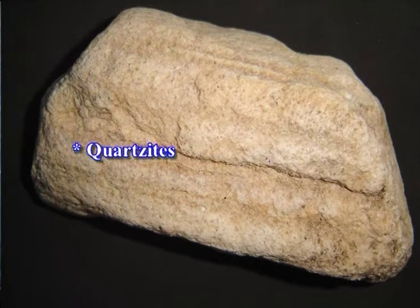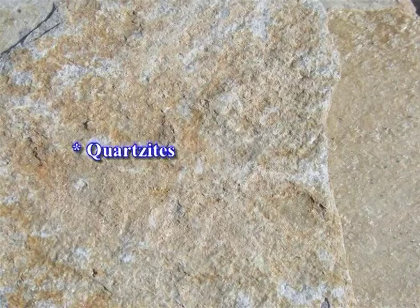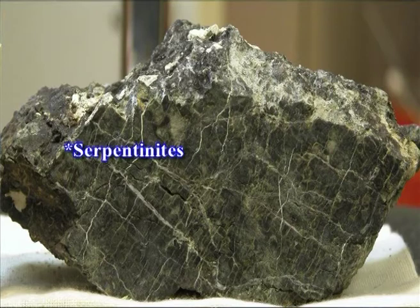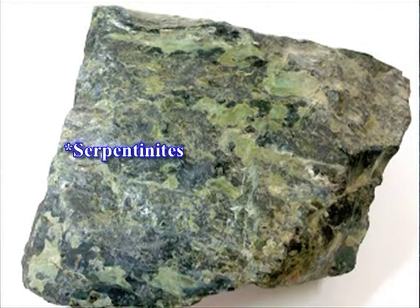Quartzites: quartz-arenites and chert are both composed mostly of SiO2. Since quartz is stable over a wide range of pressures and temperatures, metamorphism of quartz-arenites and chert will result only in the recrystallization of quartz, forming a hard rock with interlocking crystals of quartz — such a rock is called a quartzite. Serpentinites: rocks that consist mostly of serpentine, formed by hydrothermal metamorphism of ultra-basic igneous rocks.